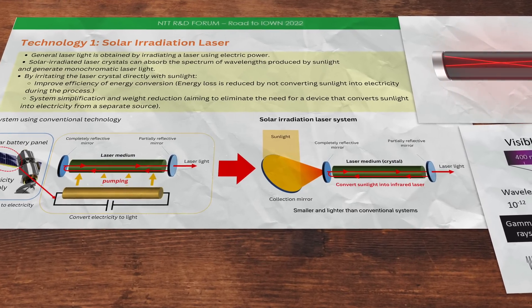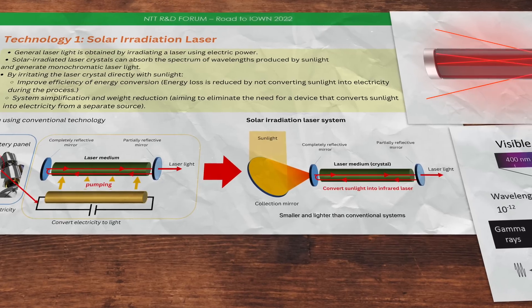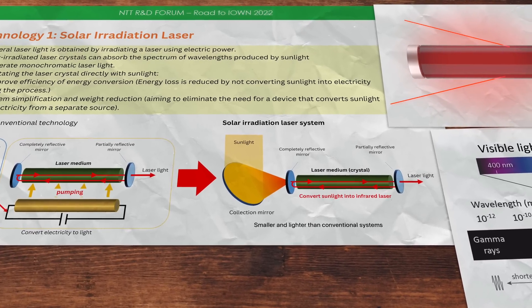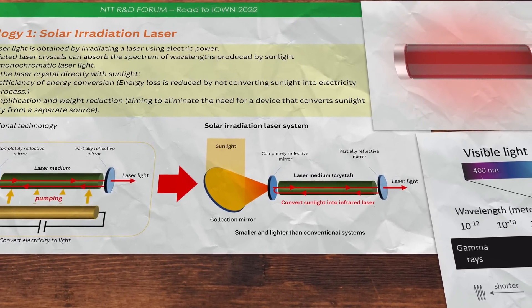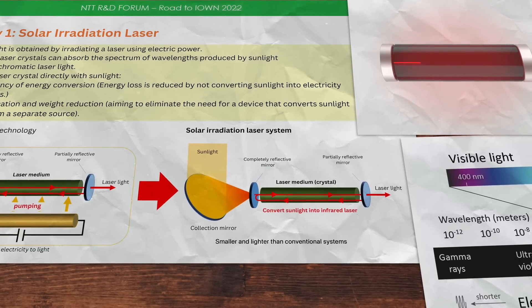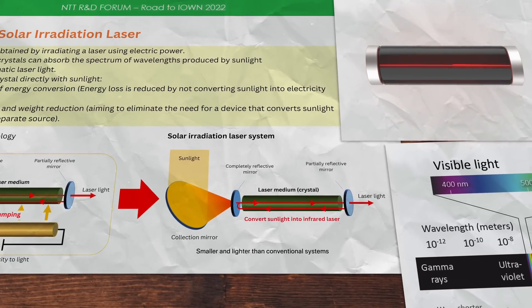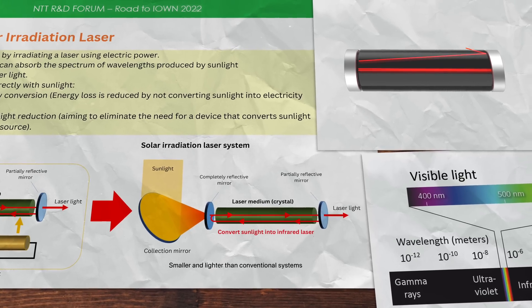But this infrared light would just spread out in all directions. But what we want is a super focused laser beam to shoot down to Earth. So like all lasers, the NTT team will have a completely reflective mirror on one end of the crystal and a partially reflective mirror on the other.